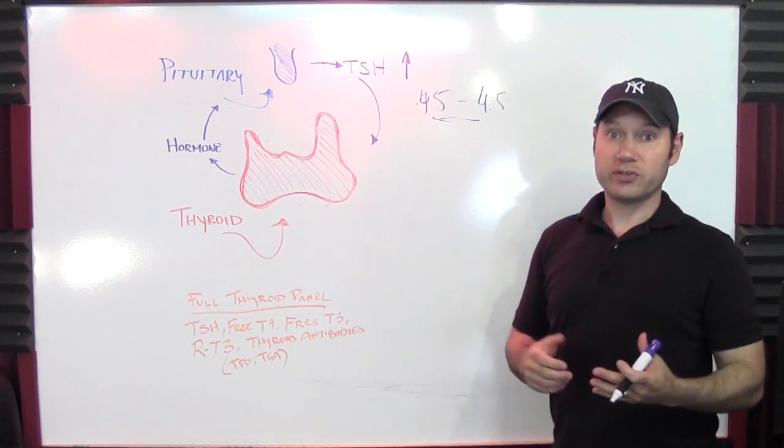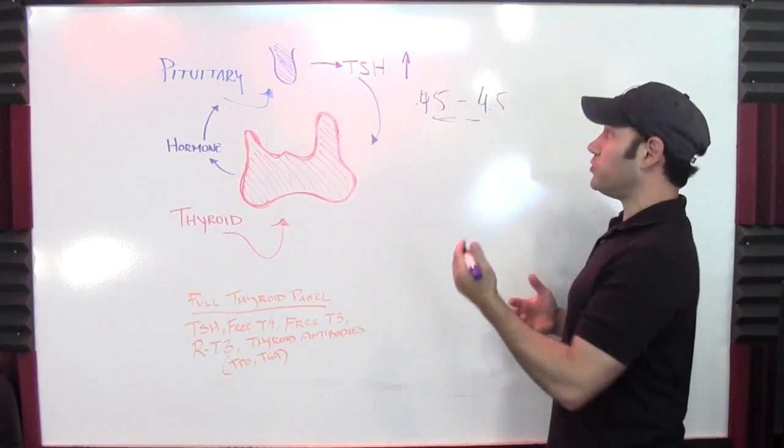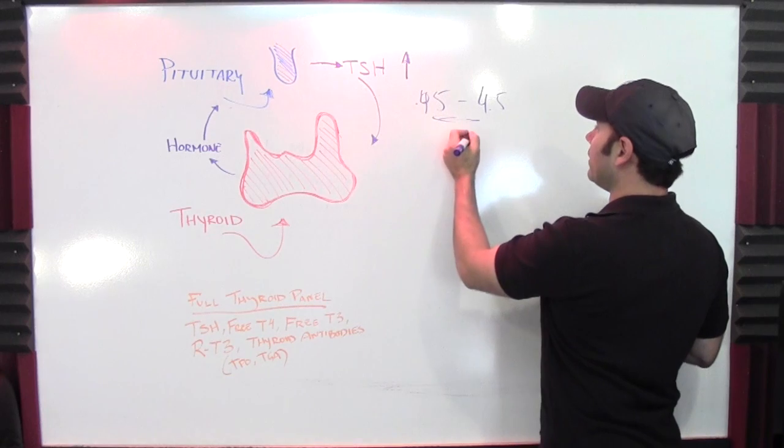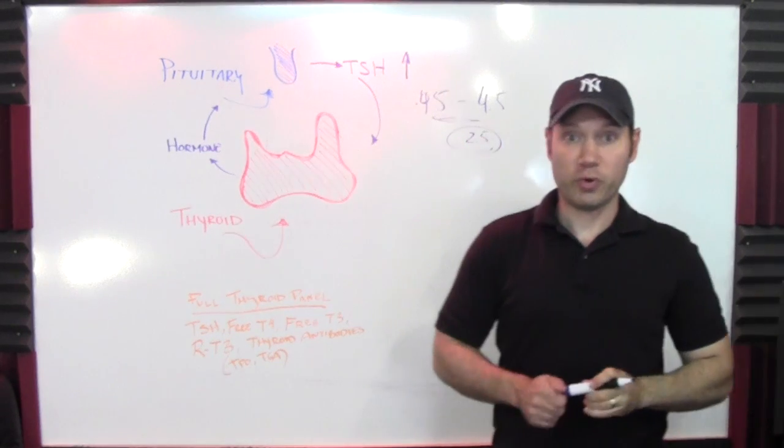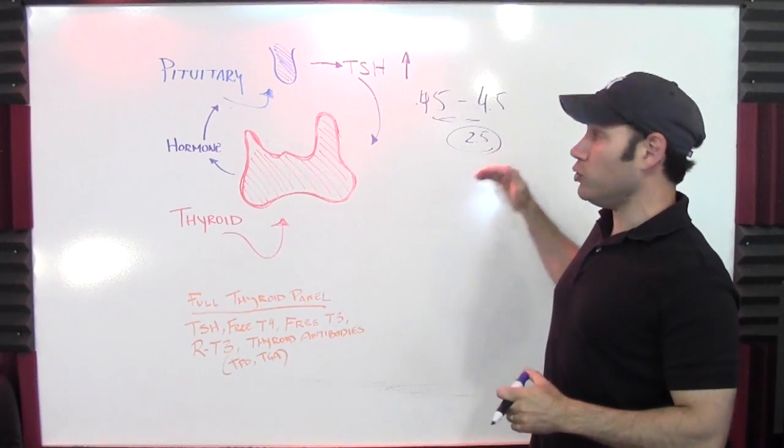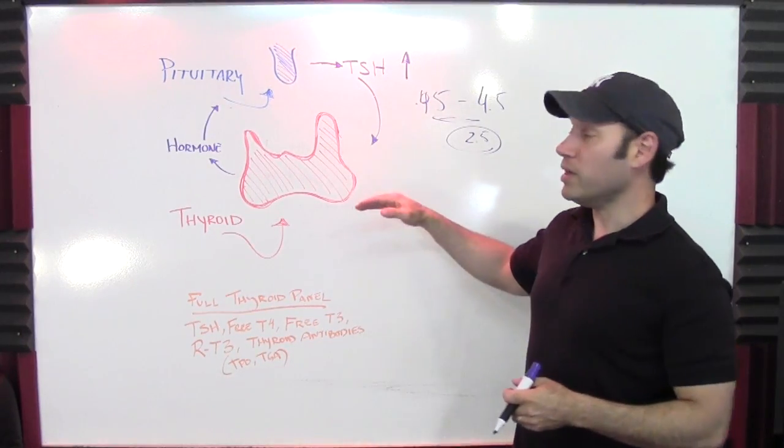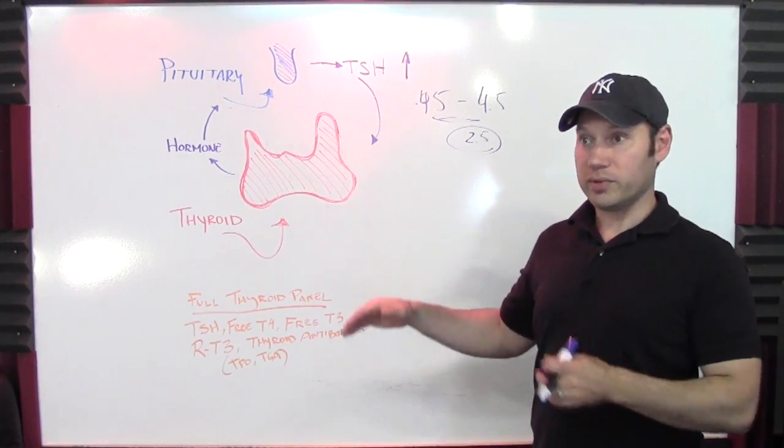There's newer research out. It's actually not that new. But for whatever reason, doctors are still using the whole reference range. That upper range should be 2.5. That upper reference range should be 2.5. So anything above 2.5 should be indicative of some sort of thyroid problem.